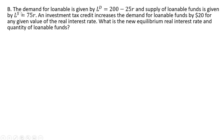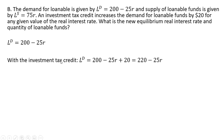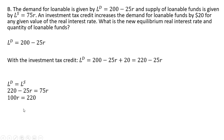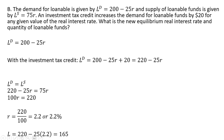In Part B, we have the same demand and supply as Part A, but an investment tax credit increases the demand for loanable funds by $20 for any given value of the real interest rate. To incorporate this, we add $20 to the demand equation: $220 minus 25R. Setting quantity demanded equal to quantity supplied, adding 25R to both sides and dividing through by 100, the investment tax credit causes the real equilibrium interest rate to rise to 2.2%. The equilibrium quantity also rises to $165.